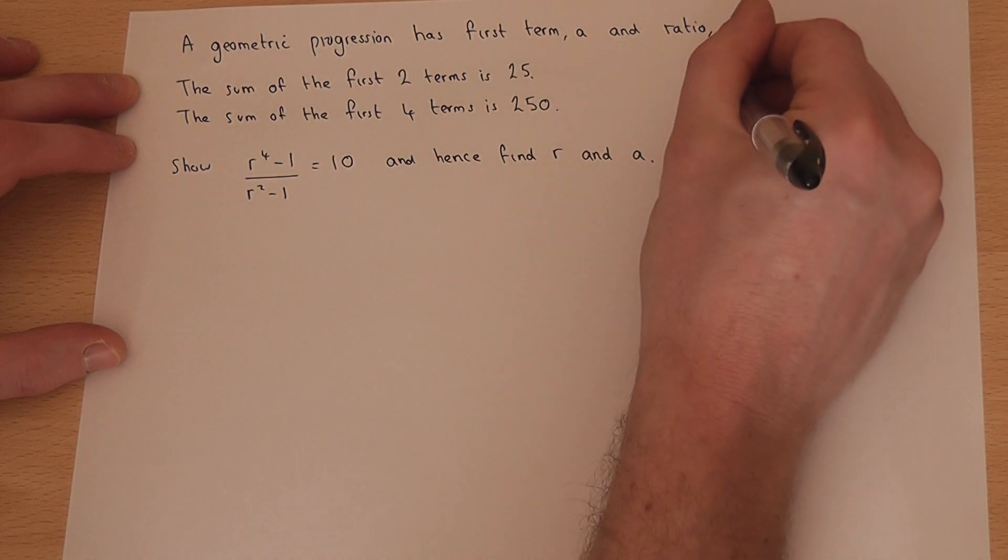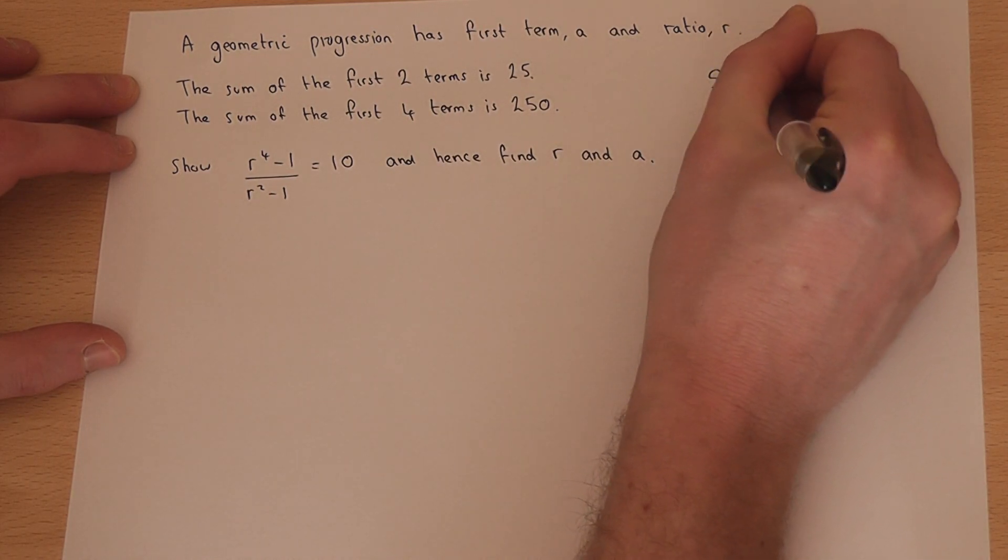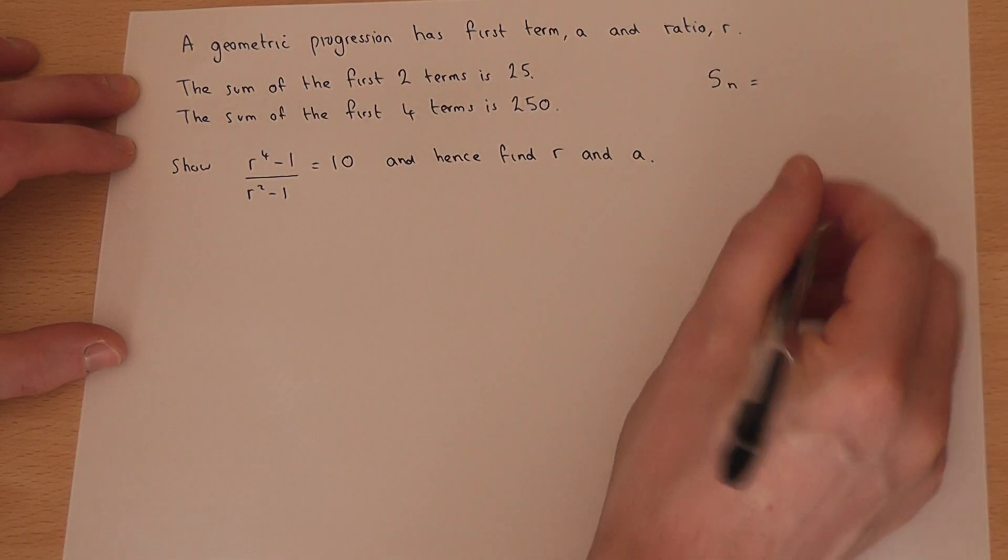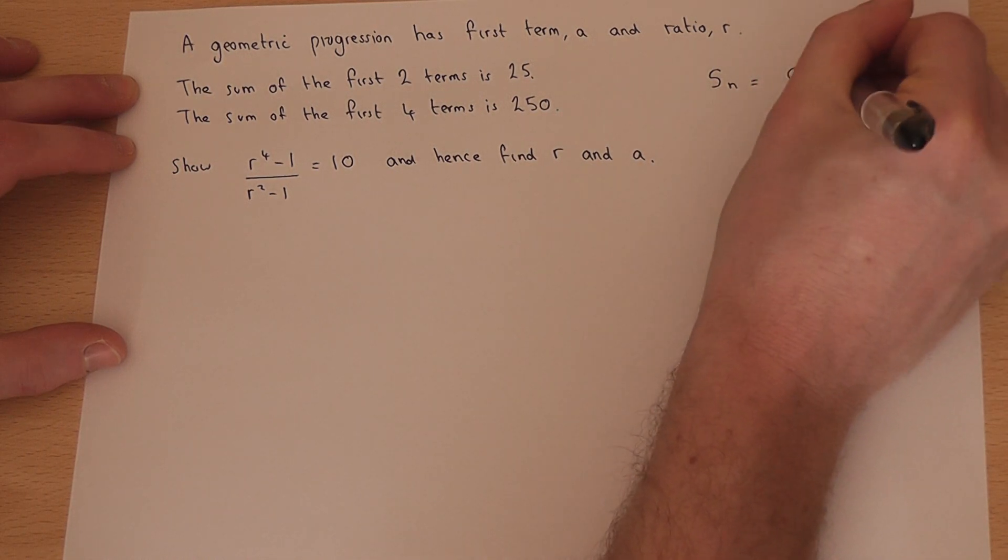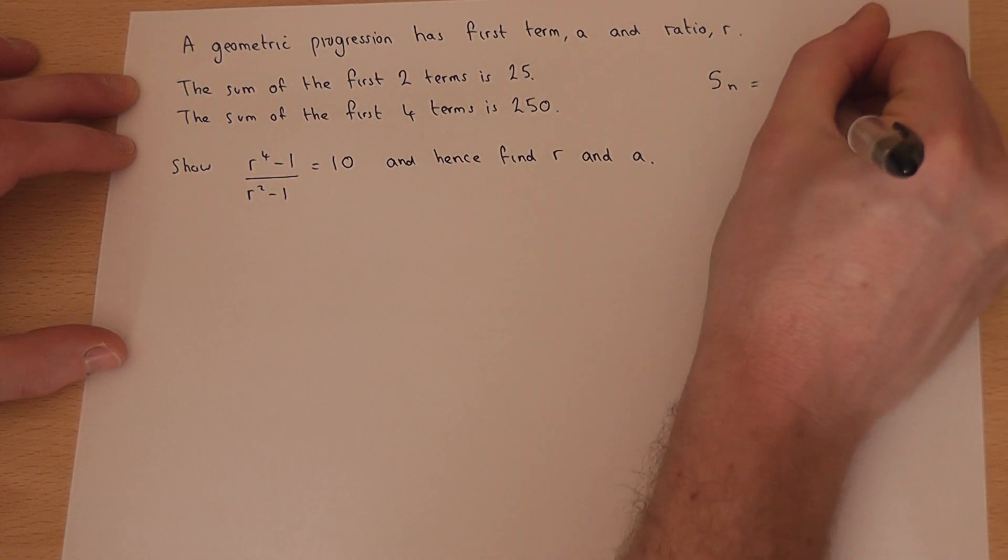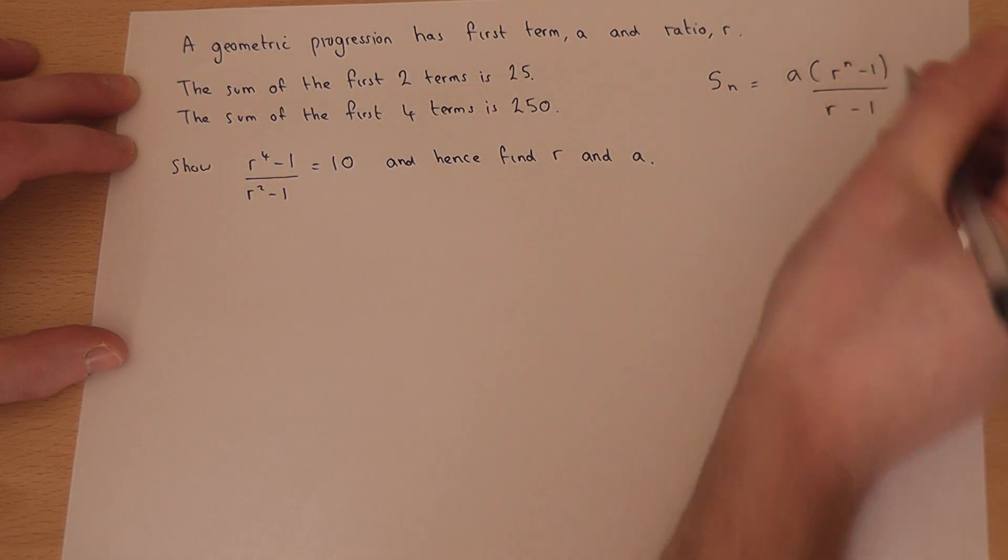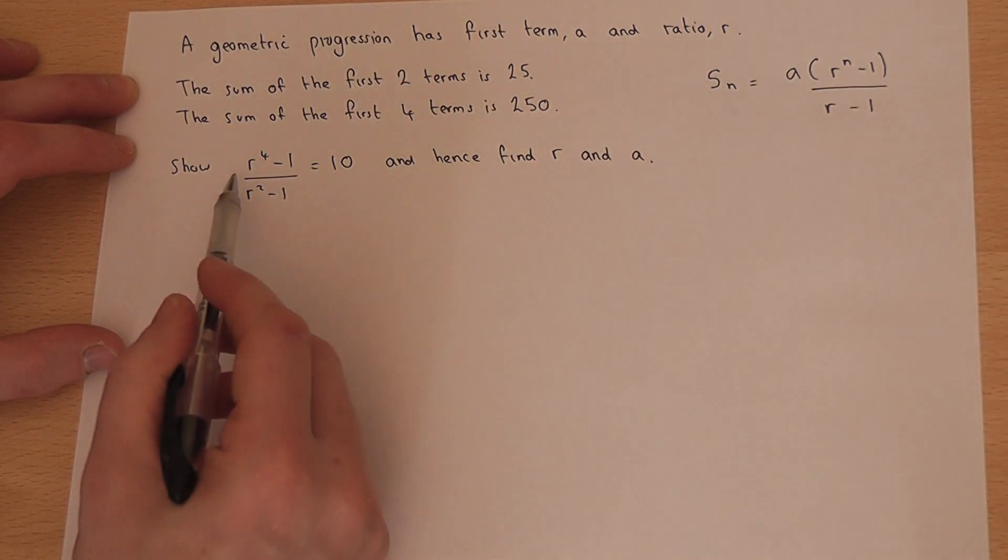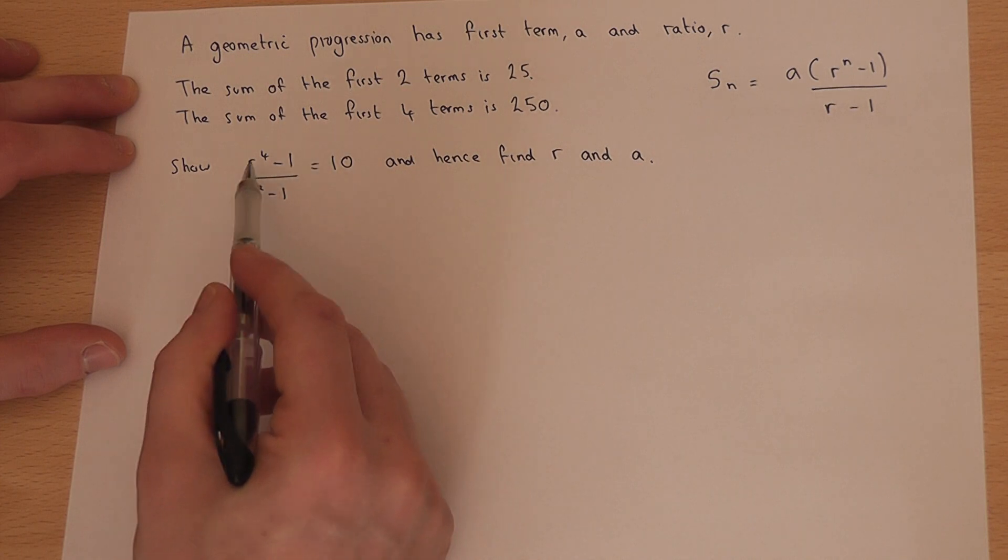Now we know that the general formula for the sum of the first n terms of a geometric progression is a(r^n - 1)/(r - 1). And this looks a little bit like this result here in terms of powers.